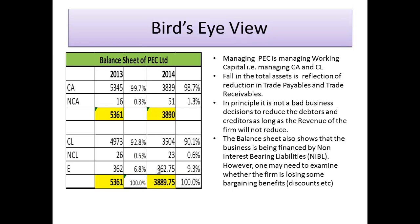This reduction is due to changes in working capital — current assets and current liabilities. PEC Limited is dominated by its trading activity, so managing this business is essentially managing current assets and current liabilities. The fall in total assets reflects the reduction in trade payables and trade receivables. Reducing debtors and creditors is not a bad decision as long as revenue does not fall.